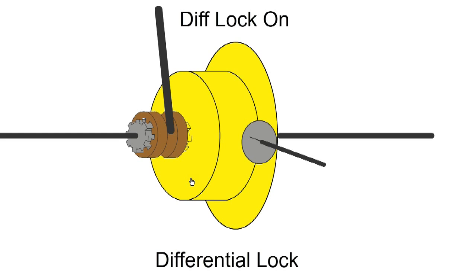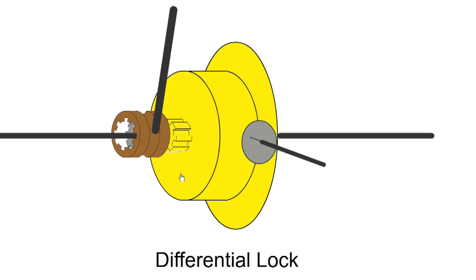A locked diff will allow no difference in speed between both wheels and is normally only used on off-road vehicles.